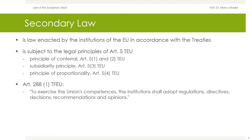Secondary law, in contrast to primary law, is law enacted by the institutions of the European Union in accordance with the treaties, which is subject to the legal principles of Article 5 TEU. These principles include the principle of conferral, the subsidiarity principle, and the principle of proportionality. There are different forms of secondary law; see Article 288 TFEU.